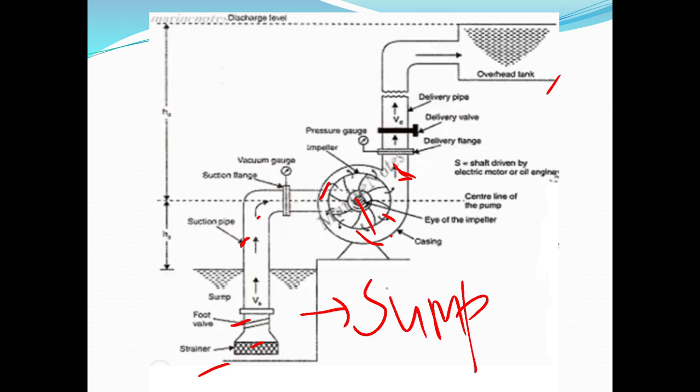We have a strainer, a foot valve, and a non-return valve. We have water storage because of electrical energy — we rotate to mechanical energy, then to centrifugal force. We rotate the liquid and move it through the suction pipe. The spiral casing creates tangential flow. This leads to the delivery valve and the delivery pipe.